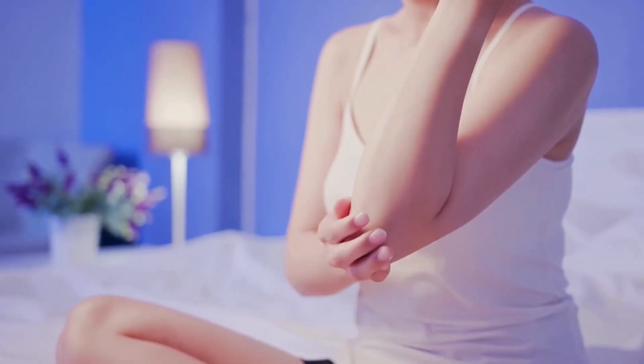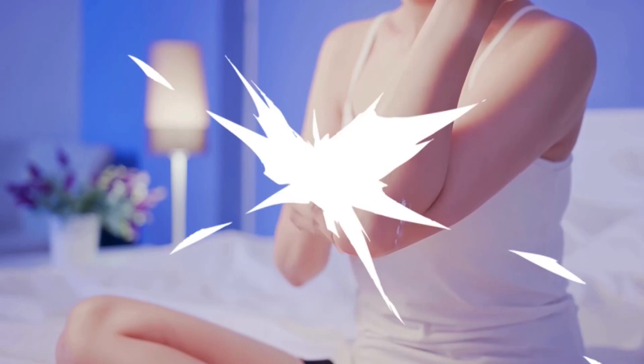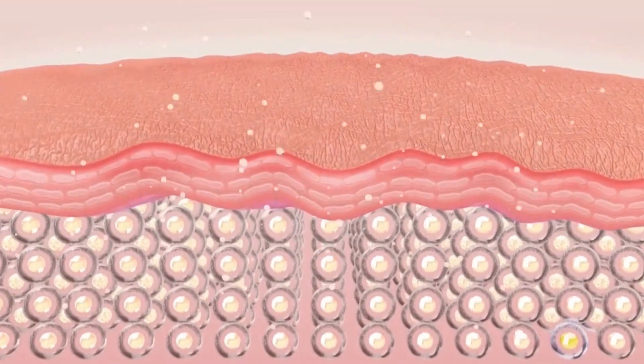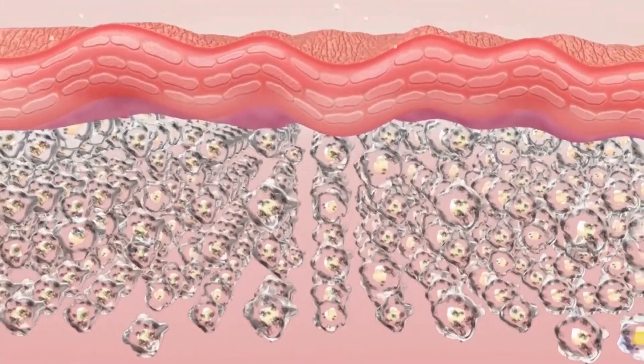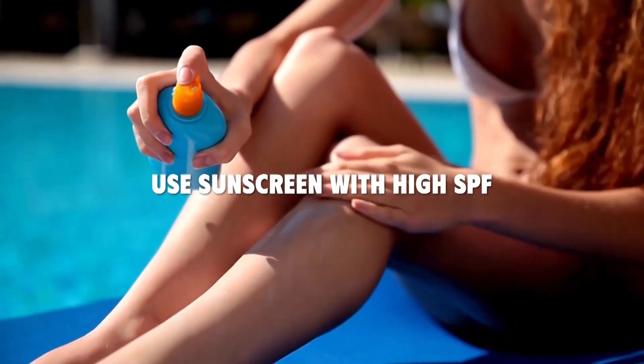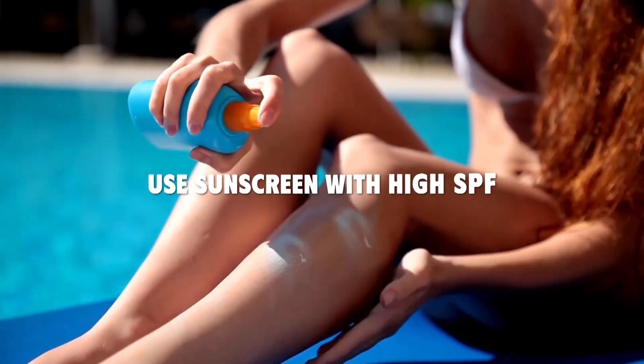Besides, you should try these formulas at night and avoid sunlight exposure. Because baking soda can increase your skin's vulnerability to sunlight, which will darken your skin. Don't forget to use sunscreen with high SPF alongside to protect your skin from pigmentation.